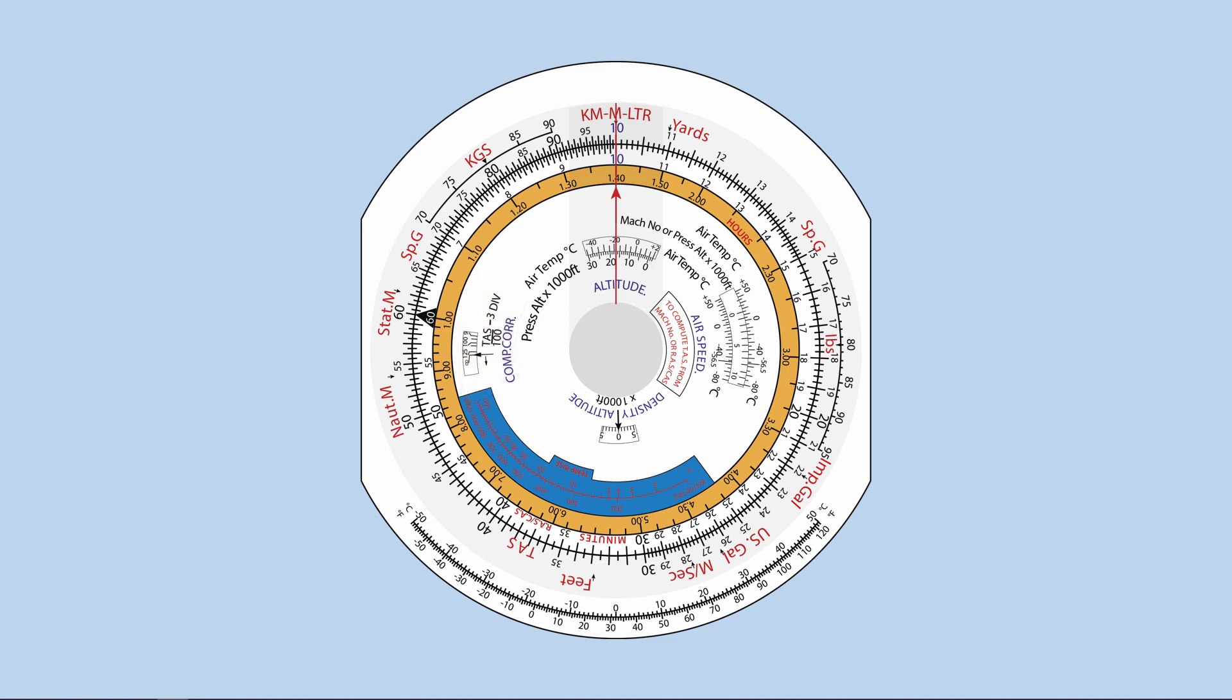Other than the inner and outer scale, the computer face of CRP5 has several different scales incorporated. Temperature conversion scale. This scale is used to convert between degree Celsius and degree Fahrenheit.